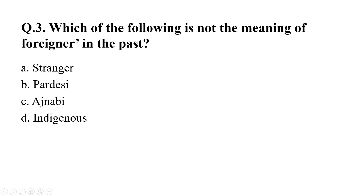Your third question is: which of the following is not the meaning of a foreigner in the past? Your options are: A. Stranger, B. Pardesi, C. Ajnabi, D. Indigenous. And your right answer is Option D: Indigenous.